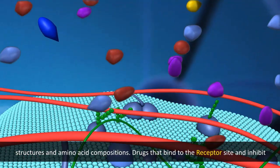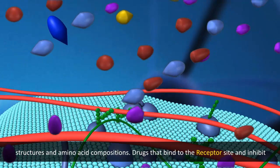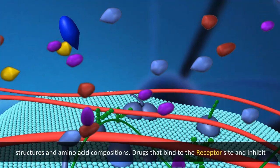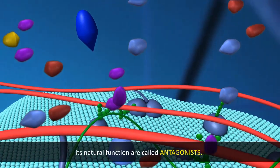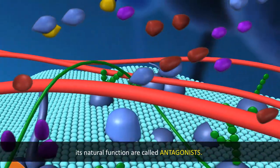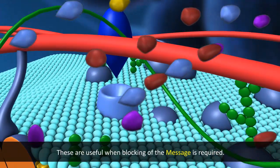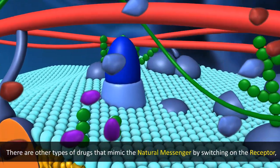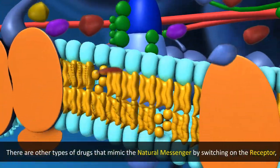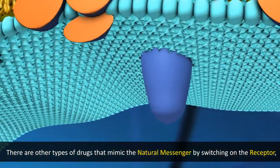Drugs that bind to the receptor site and inhibit its natural function are called antagonists. These are useful when blocking of the message is required. There are other types of drugs that mimic the natural messenger by switching on the receptor.